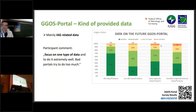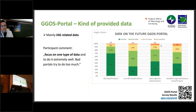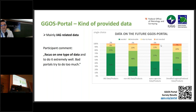A few more results from the survey: one question was which kind of data should be provided — mainly IAG data or IAG-related data. There was also a comment by one participant which I totally agree with: focus on one type of data and do it extremely well; bad portals try to do too much. That is very important, and that is also what we want to do — integrate a focused set of geodetic data and products, do it well, and then expand step by step.